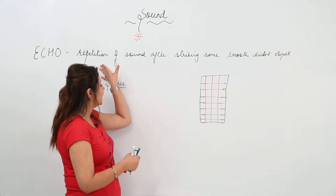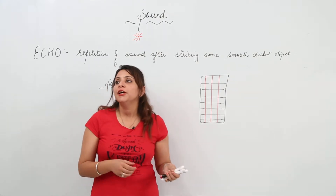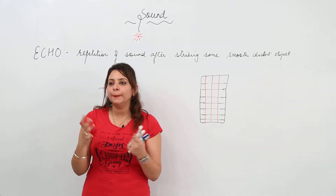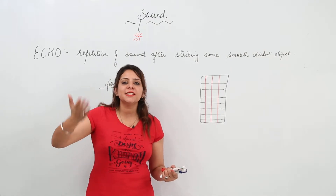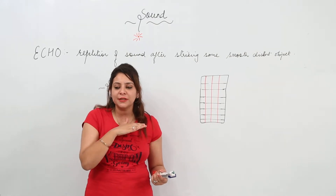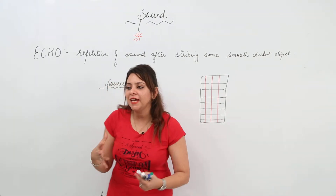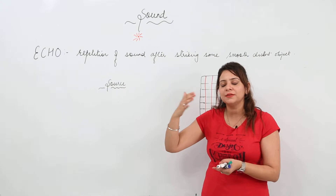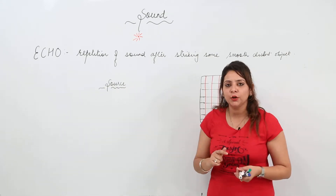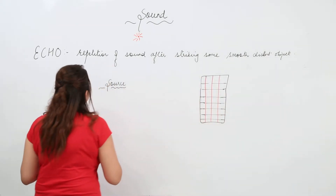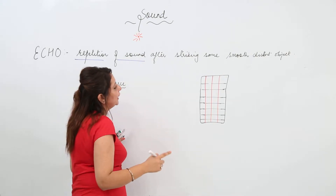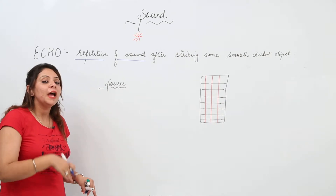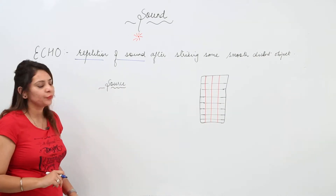We are going to start with an interesting topic — the echo. It is an important property of sound. You must have encountered this whenever you go to a hill station: you stand on top of the hill and say someone's name, and you can hear that sound again after you finish saying it. This repetition of sound after striking some smooth distant object is called an echo.